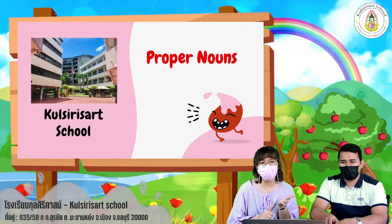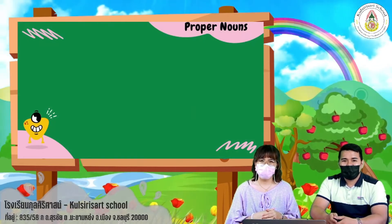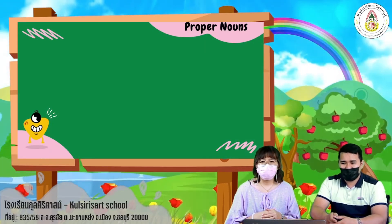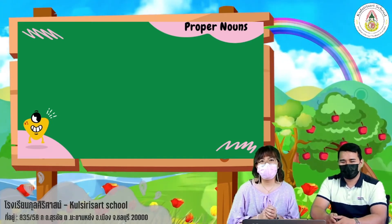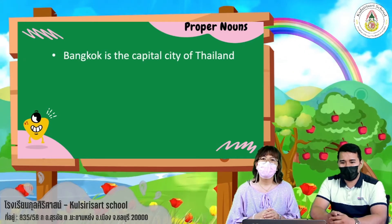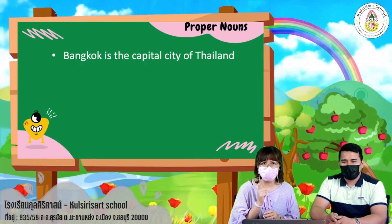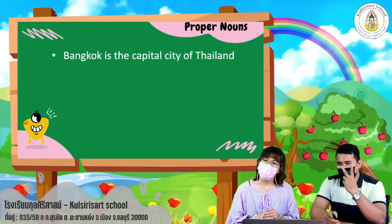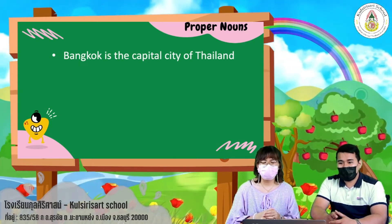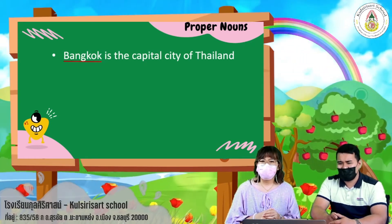Now let's look at sentences and find the proper noun. First sentence: 'Bangkok is the capital city of Thailand.' In this sentence we have two proper nouns — Bangkok and Thailand.